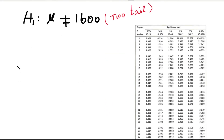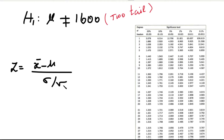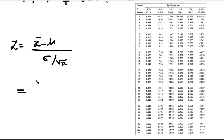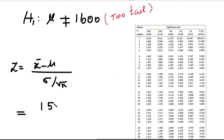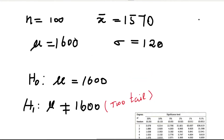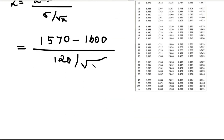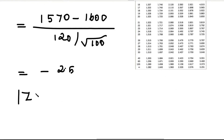Next, we calculate the Z value using the formula: Z equals x-bar minus mu, divided by sigma divided by root of n. Substituting all values: x-bar is 1570, minus mu value 1600, divided by sigma 120, divided by root of 100. The answer is minus 2.5. Now find the modulus of Z: modulus of minus 2.5 equals plus 2.5.